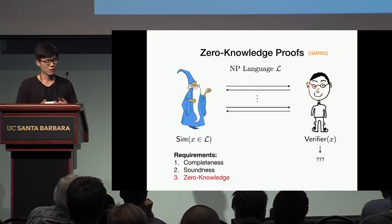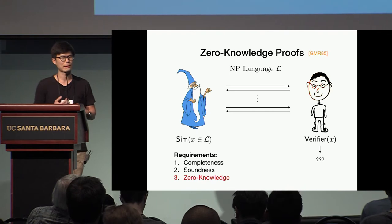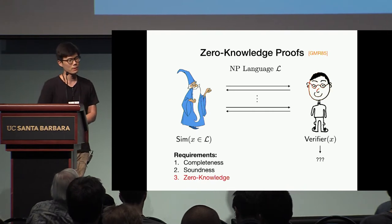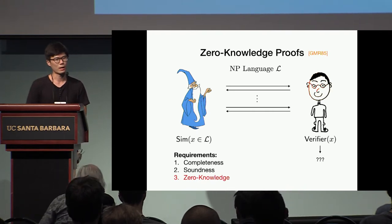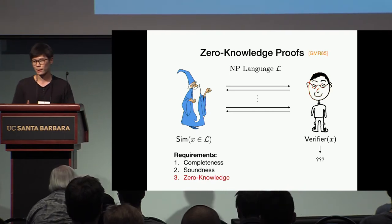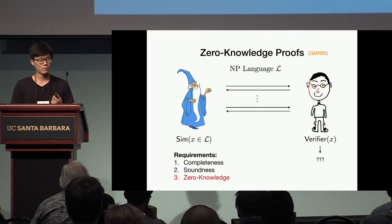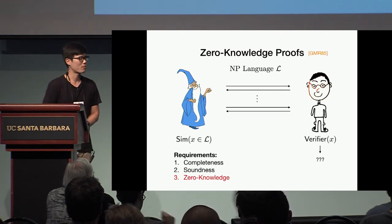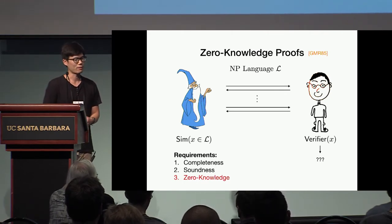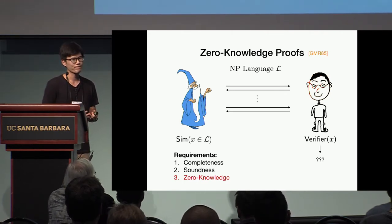The zero-knowledge property says that a verifier participating in the protocol should not be able to learn any more information about the statement X, other than the fact that the statement X is contained in the language. We capture this third property using the existence of some simulator that can simulate the transcript of the protocol from the perspective of the verifier, without knowledge of any witness.